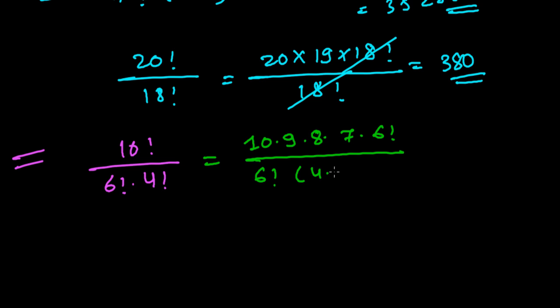I can write as 4 times 3 times 2 times 1. Then 6 factorial cancels. From what remains, 4 times 2 is 8, which cancels. The 3s cancel, and the 2s cancel. So 10 times 3 times 7 equals 210.